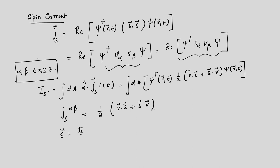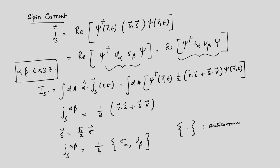Using S = (ℏ/2)σ, where σ denotes the Pauli matrices, we can write J_s^{αβ} = (1/4){σ_α, v_β}, where we have taken ℏ = 1 and {·,·} denotes the anticommutator. Recall that the anticommutator {A, B} = AB + BA, while the commutator has a minus sign. This is the form of the spin current and its components.